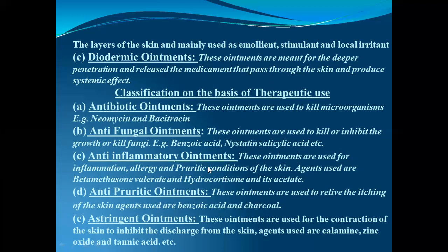Anti-pruritic ointments are used to relieve itching of the skin; agents used are benzoic acid and charcoal. Next, astringent ointments are used for contraction of the skin to inhibit discharge from the skin; agents used are calamine, zinc oxide, and tannic acid. So up till now we have discussed what is topical preparation, what is transdermal drug delivery system, what are the types and classification of ointments — classified on the basis of penetration and on the basis of therapeutic use.